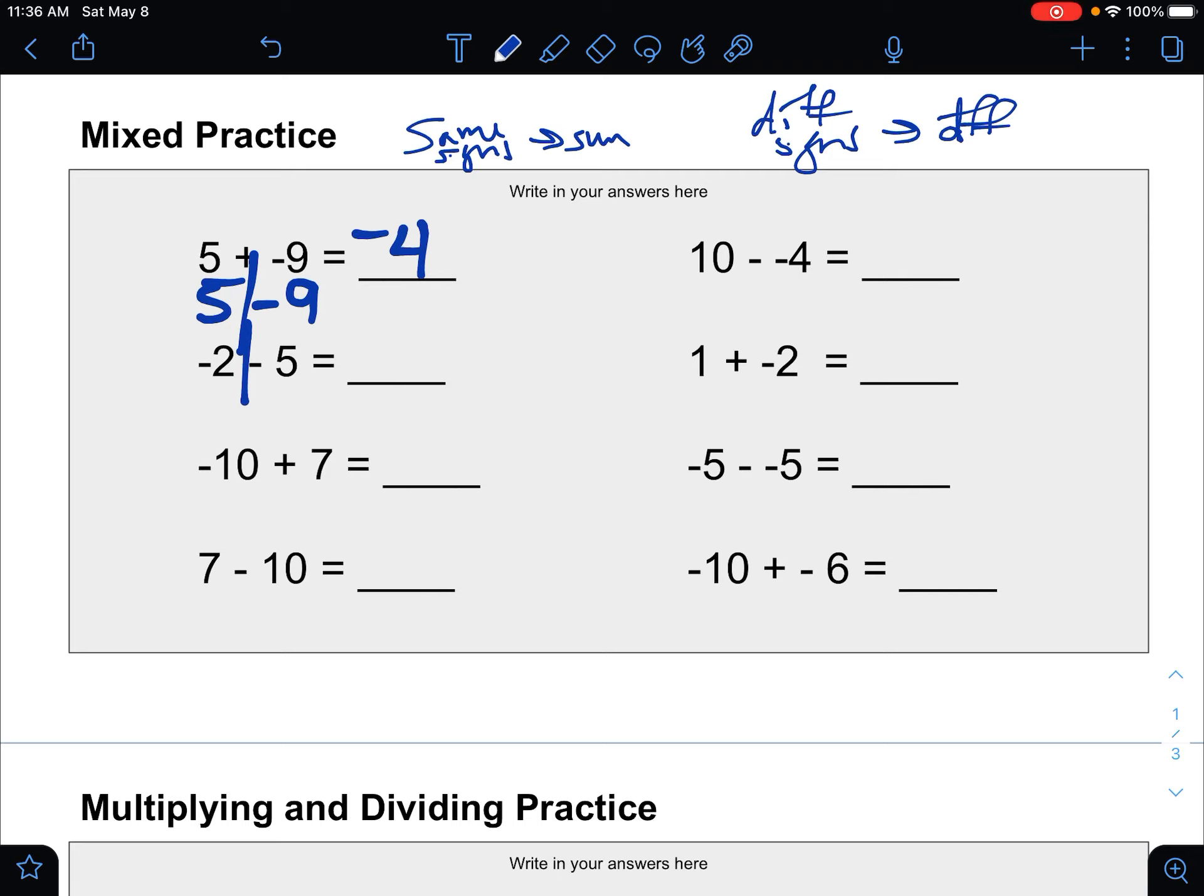For the next one, negative 2 minus 5, they're both negative, so that's the same signs, find the sum. Put them together and keep the negative. So negative 7 would be our answer for that one.